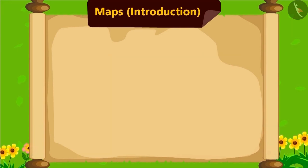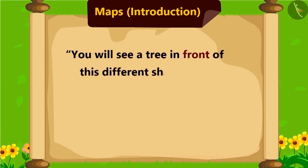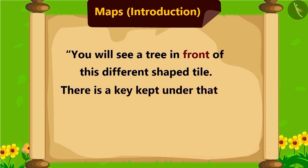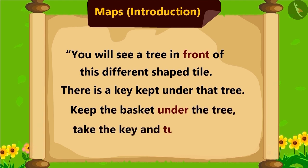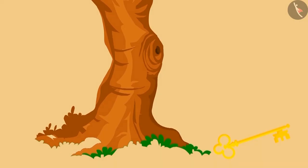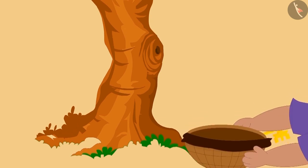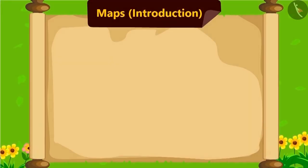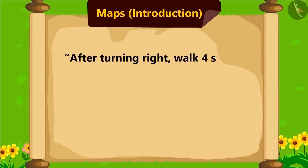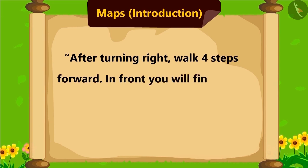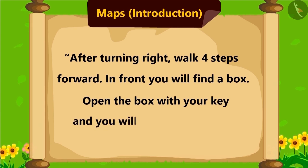Now Bablu read the instructions further. You will see a tree in front of this different shaped tile. There is kept a key under that tree. Keep the basket under the tree. Take the key and turn right. Bablu kept the basket under the tree and turned right as mentioned. After turning right, walk four steps forward. In the front, you will find a box. Open the box with your key and you will get your treasure.